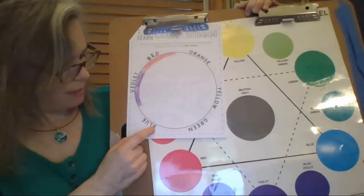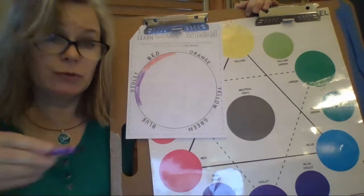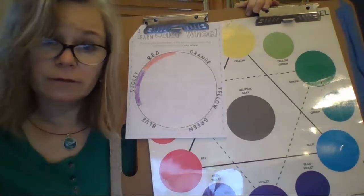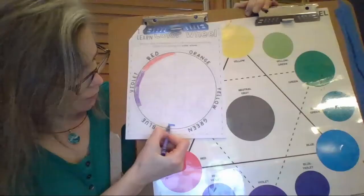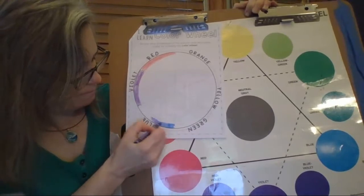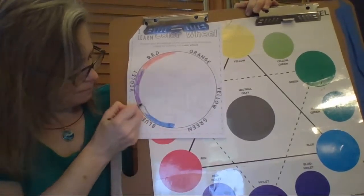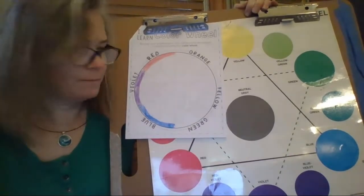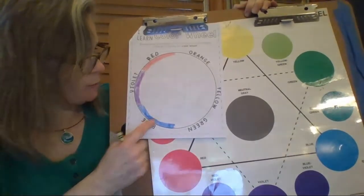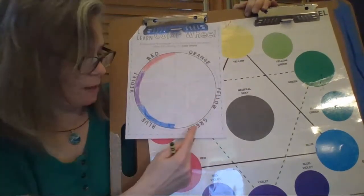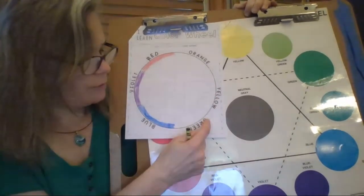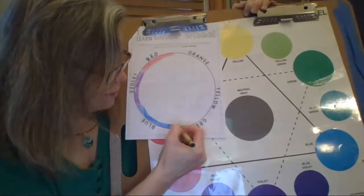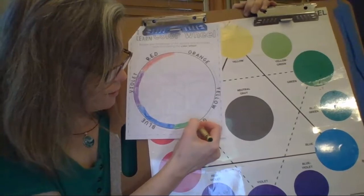And then down here, B-L-U-E, that's blue. Make sure I have the blue crayon. And blue goes right there. And then in between blue and yellow, this one's going to be yellow, is going to be green. So G-R-E-E-N, it's sort of upside down. And I'm going to color that in with my green crayon.